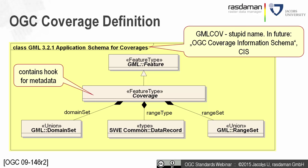This is often abbreviated as GMLCov — specification document 09-146R2, originally titled 'GML 3.2.1 Application Schema for Coverages.' That name was found to be misleading, so in 2015 OGC renamed it to OGC Coverage Information Schema, or CIS. This CIS represents an interoperable, testable, concrete way of defining data structures that can be shipped between services and clients — differentiating it from the abstract ISO 19123 definition.